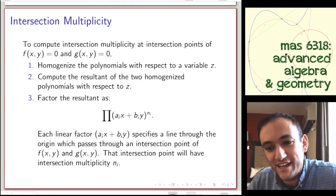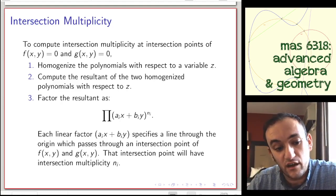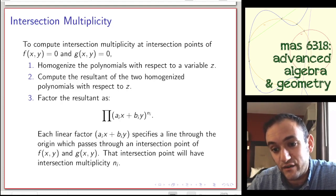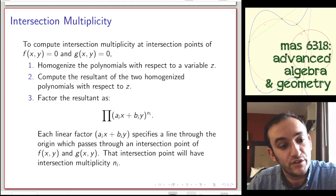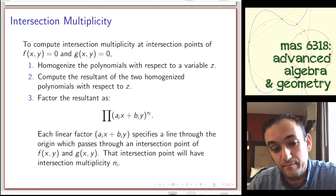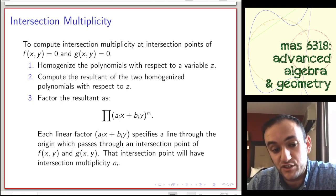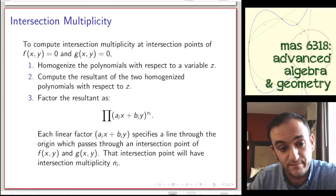To compute intersection multiplicity at intersection points of f(x,y) = 0 and g(x,y) = 0, the first thing you do is homogenize with respect to a variable z, to get us into projective geometry so we don't miss any points at infinity. Next, compute the resultant of the two homogenized polynomials with respect to z. Once you do that, you'll get a product of powers of linear forms (a_i x + b_i y)^{n_i}, and each linear factor specifies a line through the origin passing through an intersection point with intersection multiplicity n_i.